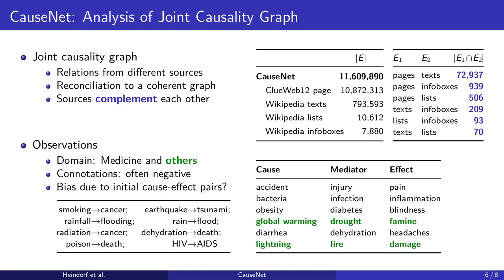Analyzing our causality graph, we made the observation that the medical domain dominates, but other domains are present too. For example, our graph also contains paths like global warming causing drought and famine, or lightning causing fire and damage.